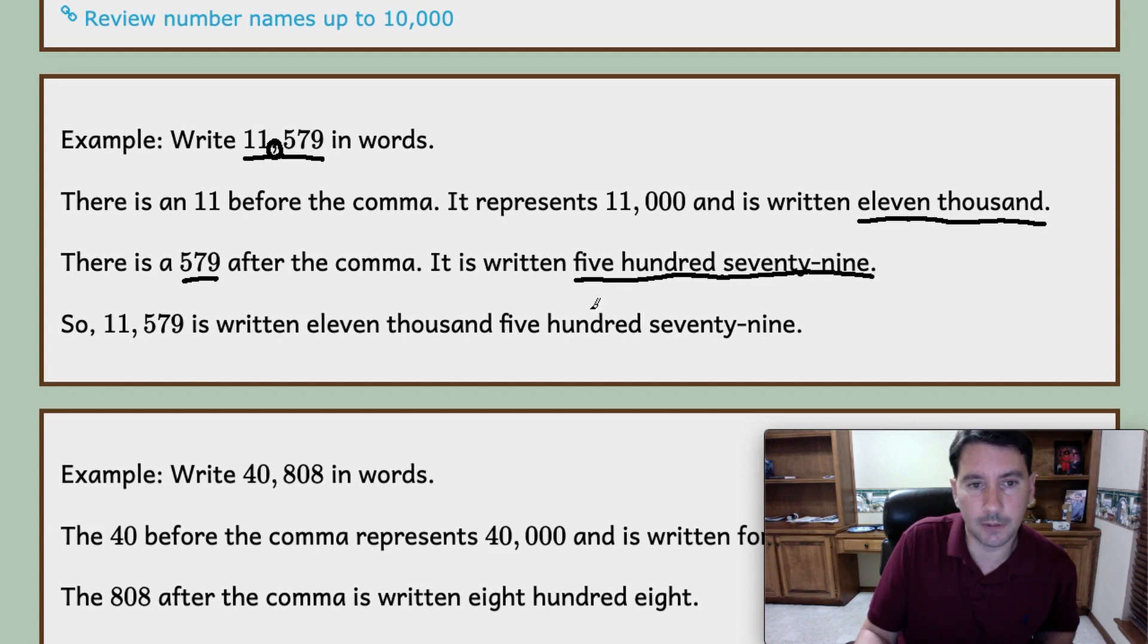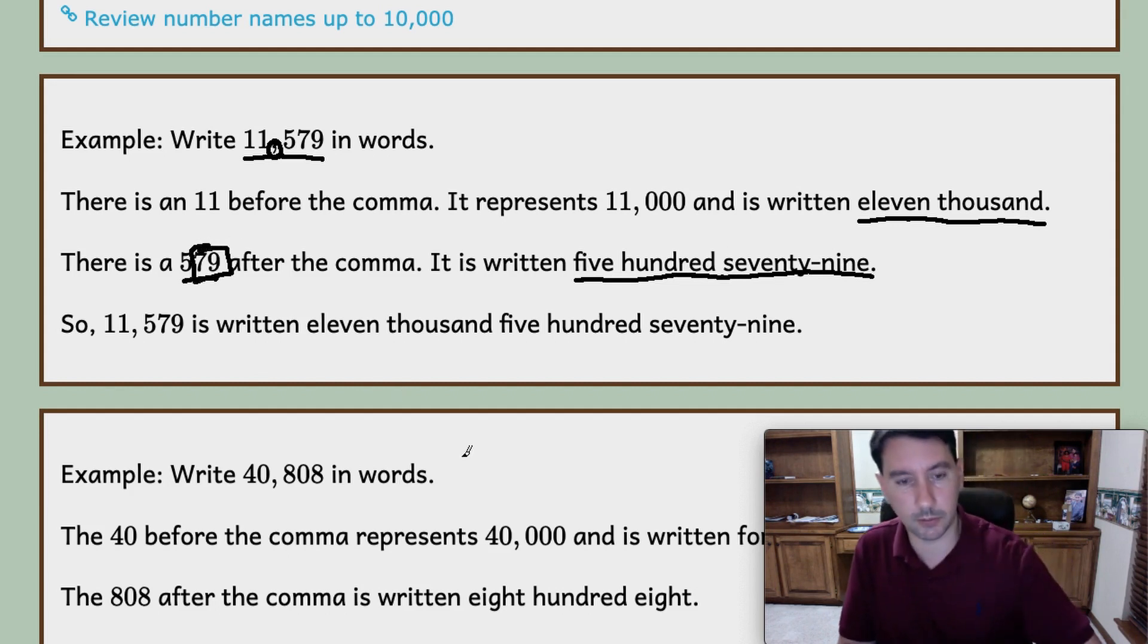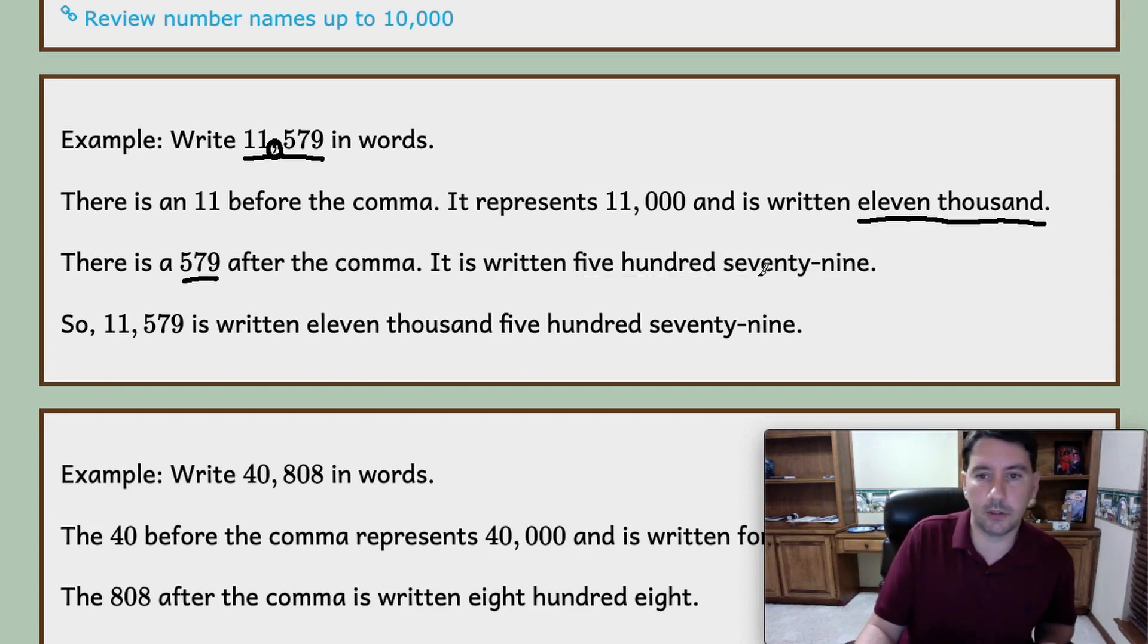After the comma there's 579, so that's written 500 and then 79. Remember that if it's a two-digit number with 2 or greater, something in the 20s or more, then you write the tens place and then a dash and then the ones place, unless there's a zero in the ones place.